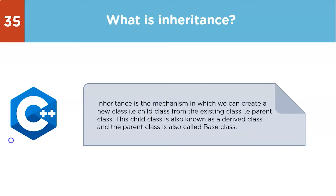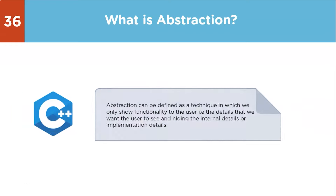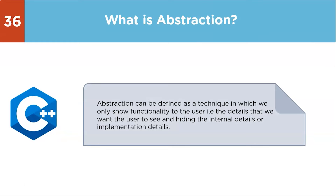Next question: what is abstraction? Abstraction is a technique in which we show only the functionality to the user — the details we want the user to see — while hiding internal implementation details that are not necessary for the user to see.